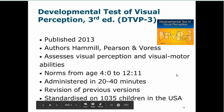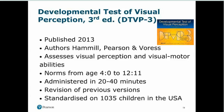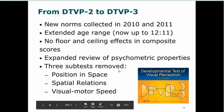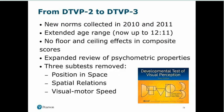Like all the tests we're discussing, this is an American test standardised on over a thousand children. The norms for this version were collected in 2010 and 2011, and one of the improvements was extending the age range up to 12 years 11 months — basically to the end of primary school. There are no floor and ceiling effects in composite scores, as items were supplemented with easier and more difficult ones. There's also been an expanded review of psychometric properties.